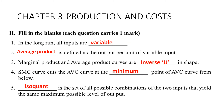Chapter three: production and cost. First: in the long run, all inputs are variable. Second: average product is defined as the output per unit of the variable input — whenever you see 'per unit,' your answer should be in average.